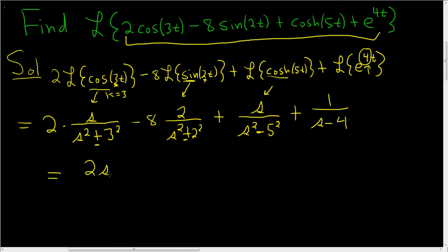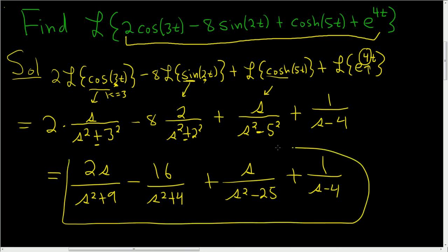This is 2s over s squared plus 9 minus 16 over s squared plus 4 plus s over s squared minus 25 plus 1 over s minus 4. And that is the answer.